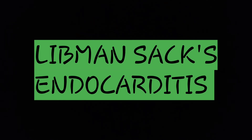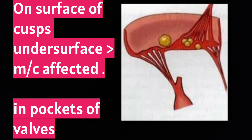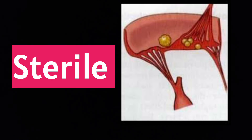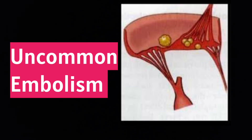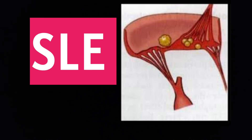Thirdly, Libman-Sacks endocarditis. Vegetations are medium-sized or small, flat, and irregular, present on the surface of the cusp. Both surfaces may be involved, but the under surface is more likely affected. They are found in pockets of valves, are sterile, embolism is uncommon, and vegetation is firm. Present in SLE.